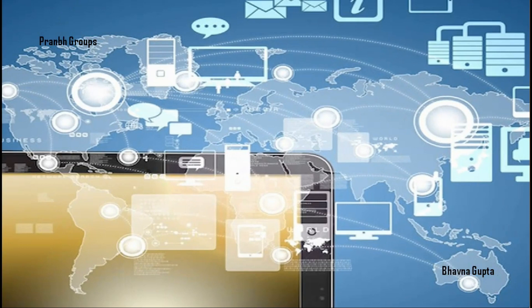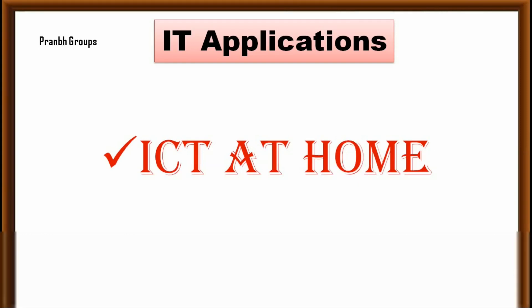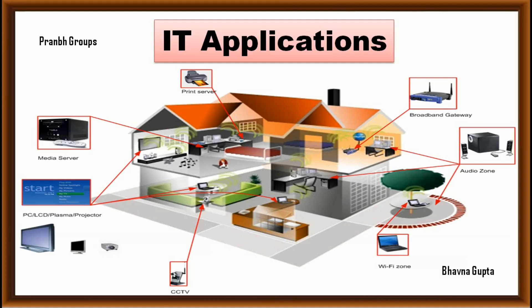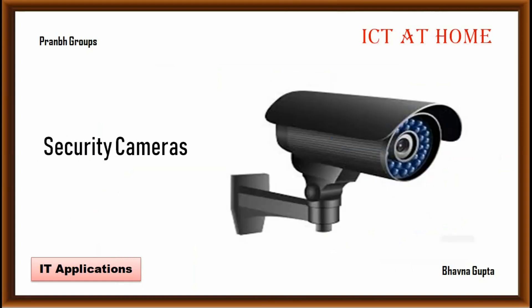The first field of IT application is ICT at home. Housing and lifestyle have also been impacted by modern technology. Maximum used items that you have in your home today are automated, which makes your life much easier, organized, and safe. Advanced technological solutions such as automated door locks, security cameras, and lighting control make our homes more secure than ever.